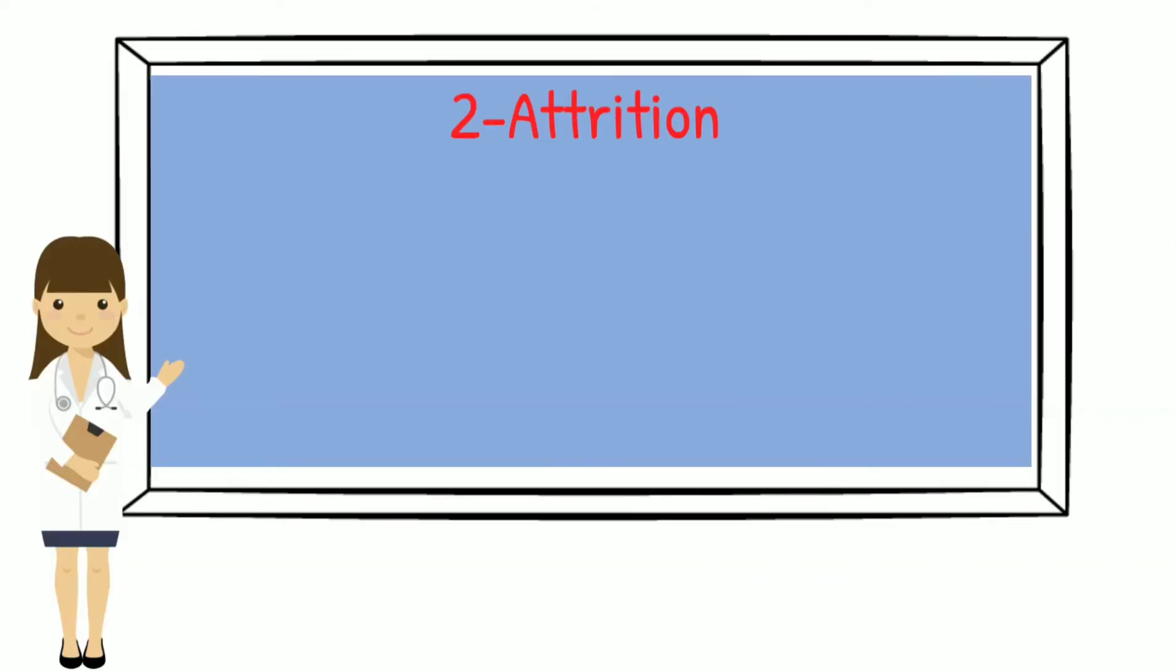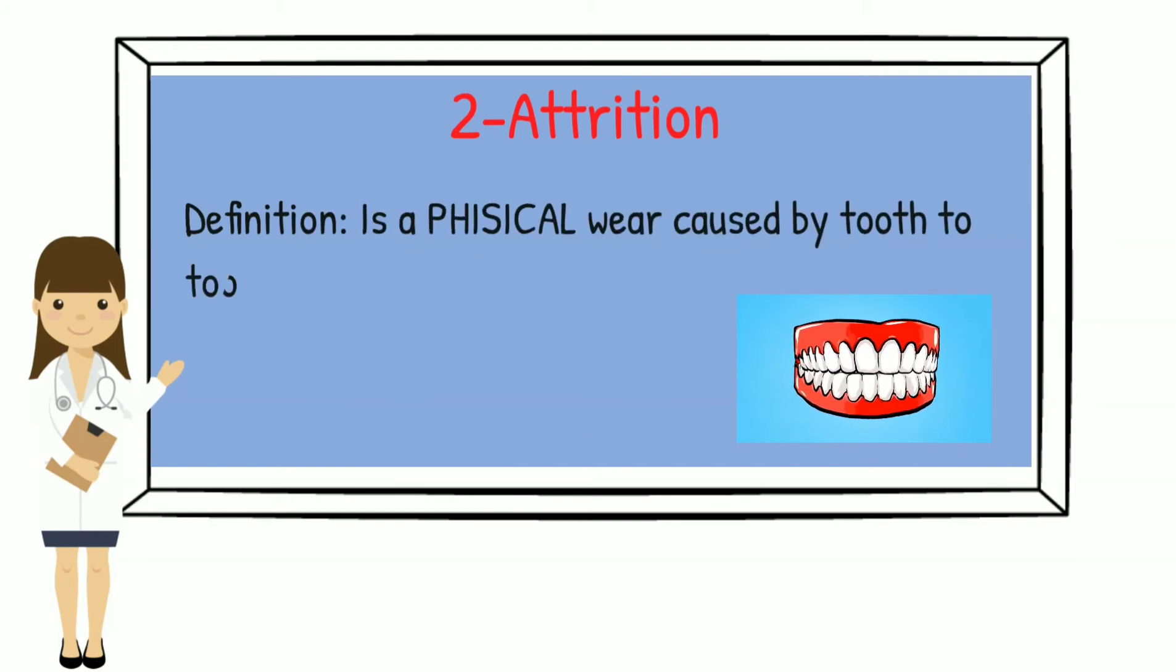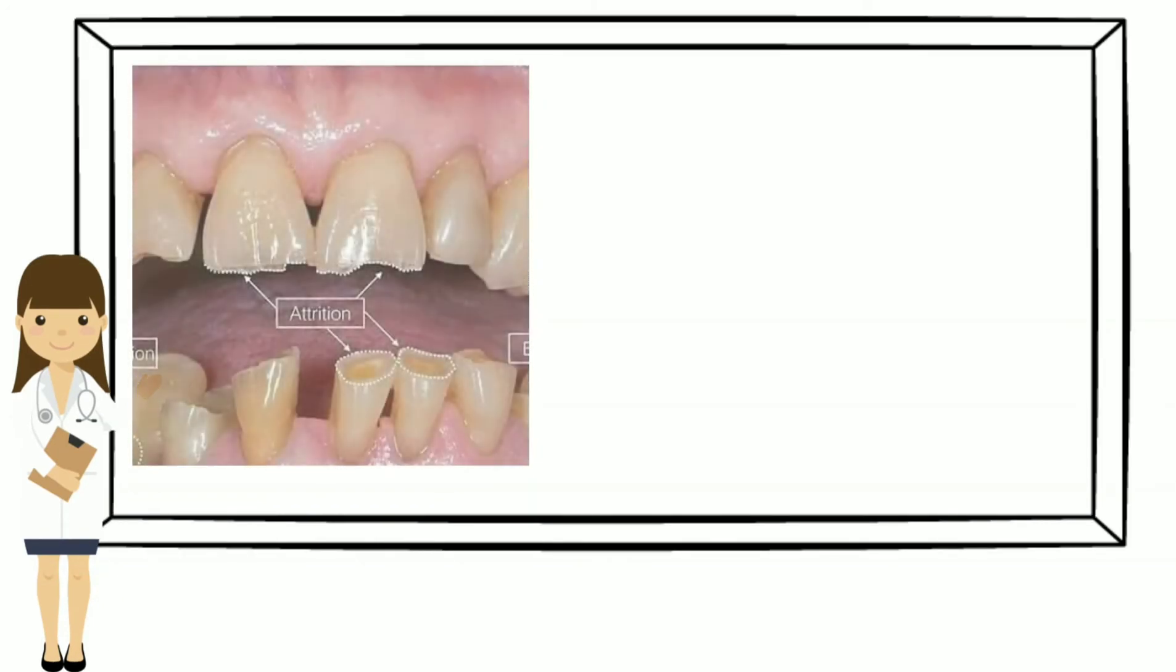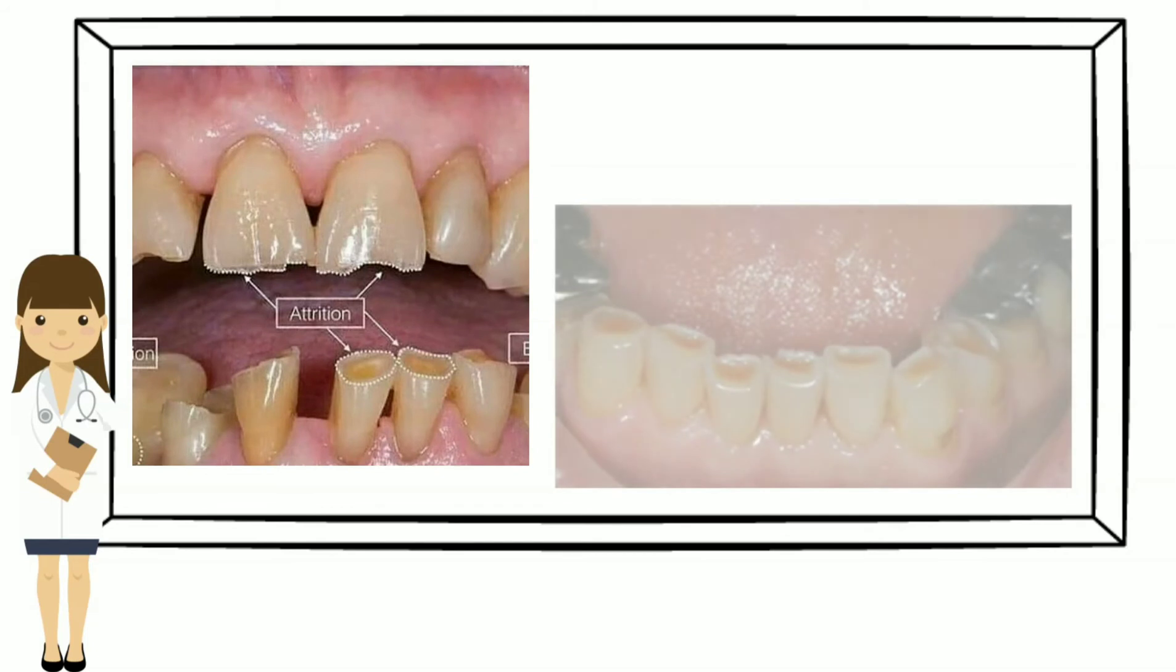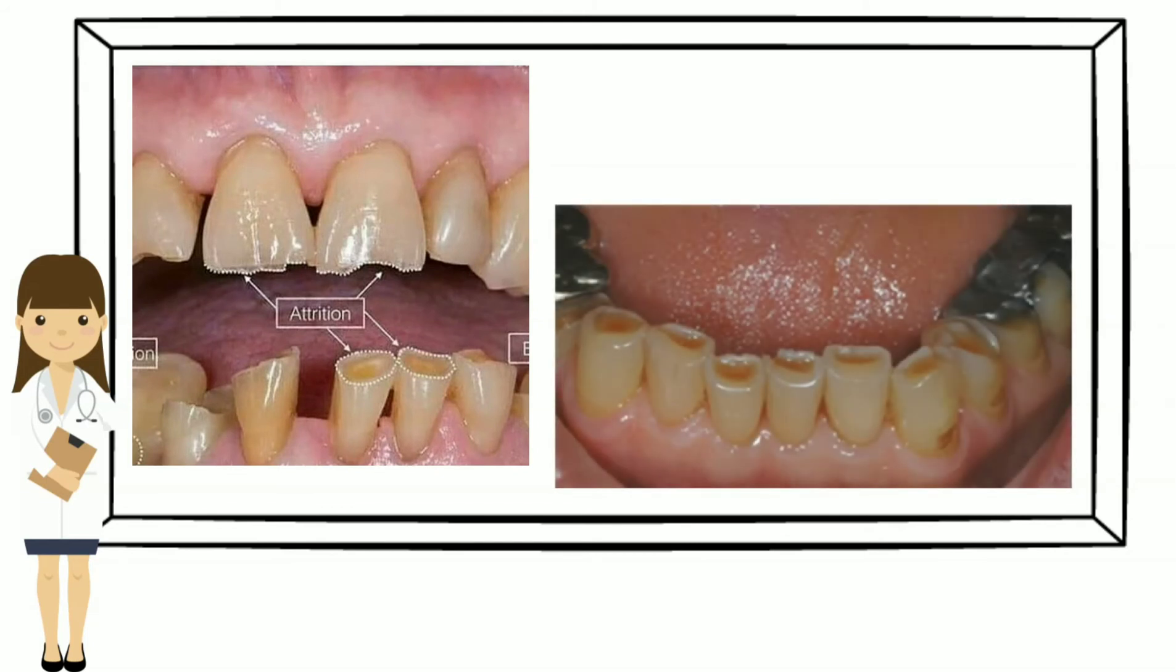The second type of tooth wear is attrition. Here, it is caused by physical tooth-to-tooth contact. The definition of attrition is physical wear caused by tooth-to-tooth contact. There are two examples for attrition and there is a hint that the occlusal wear facets match with opposing teeth.